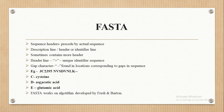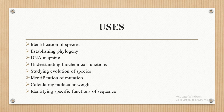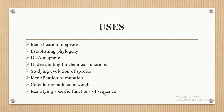FASTA displays amino acid sequences. The algorithm was developed by Freddie and Burton. The main applications of FASTA include identification of species, phylogenetic analysis, DNA mapping, understanding biochemical functions, evolution of species, identification of mutations, calculating molecular weights of different protein samples, and identifying specific functions of sequences.